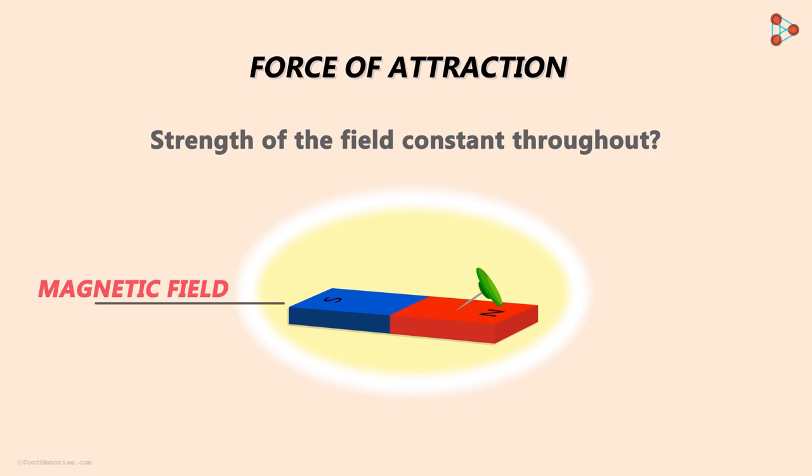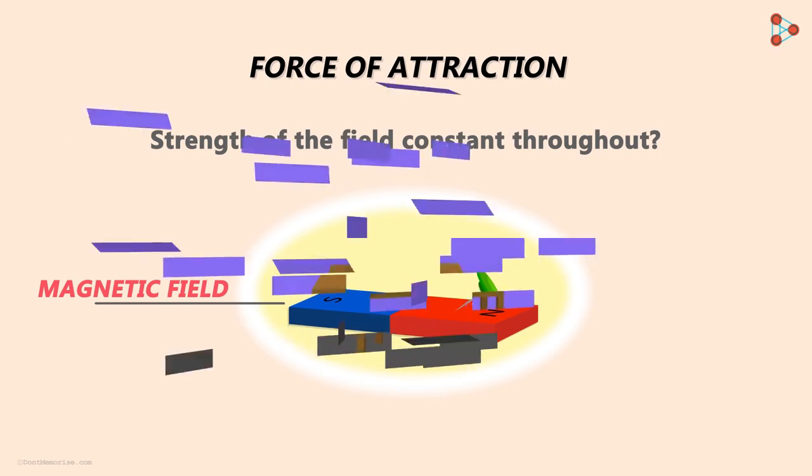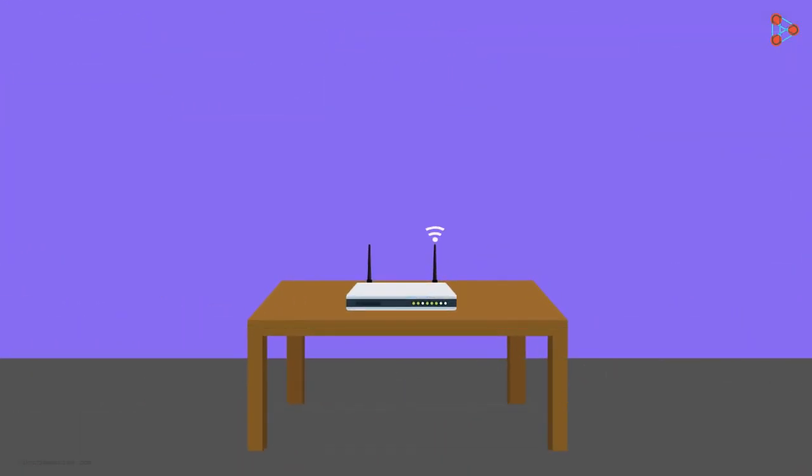Let me explain this to you with a relatable example. Assume that there is a working WiFi router present at some location. It gives off signals in all directions in some range. Now in order to connect a mobile phone to the internet, we need to bring it in this range only. This signal will be stronger nearer the router. The closer you bring your cell phone to the router, the stronger the signal will be.